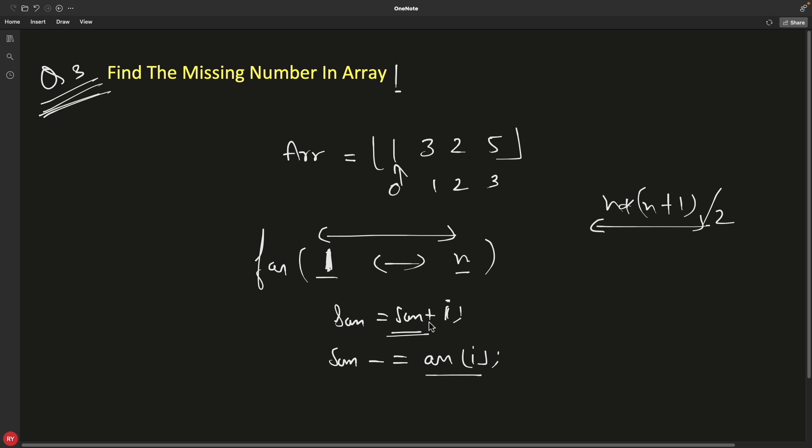This will never overflow because you keep on subtracting the numbers as well. In the end when this for loop finishes, what you will have in the sum is the difference, because you added everything and you subtracted everything one by one, and what you would have not subtracted is what's missing here.